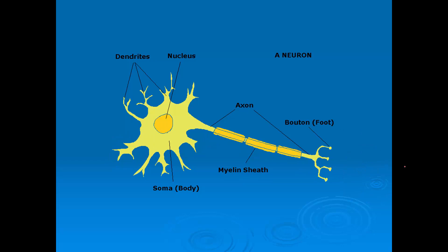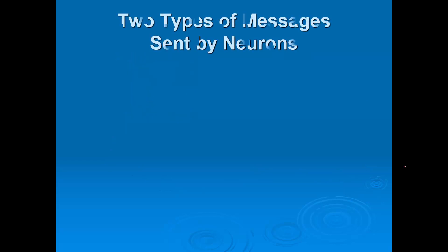Finally, what we're going to do in this short lecture is explain the two types of messages sent by neurons. Essentially there are two. The first one is called excitatory.